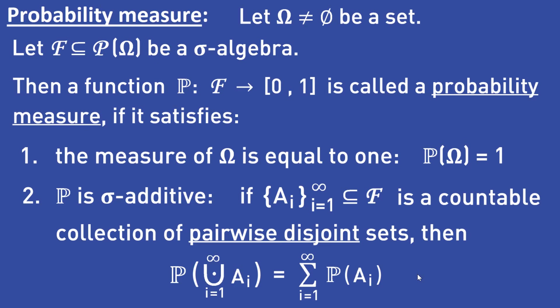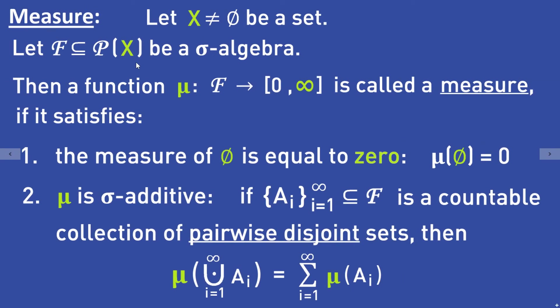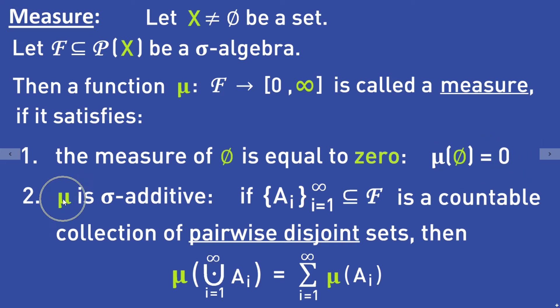The definition of a probability measure is a special case of the definition of a general measure. The definition of a measure is as follows: let X be a non-empty set and let F be a sigma algebra. Then a function mu from the sigma algebra F to the closed interval zero infinity is called a measure if the measure of the empty set is equal to zero, and mu has to be sigma additive.